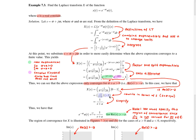We can then simplify to get 1/(s + a). So our final answer is X(s) = 1/(s + a), subject to the constraint that the real part of s is greater than −a. In other words, we have this particular result here.